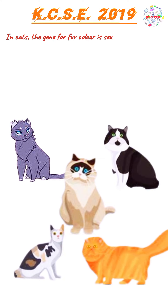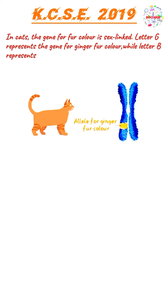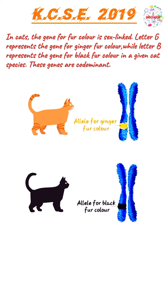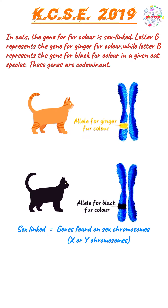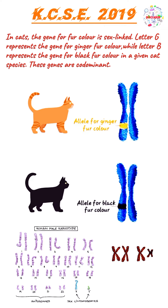In cats, the gene for fur color is sex-linked. The letter G represents the gene for ginger fur color, while the letter B represents the gene for black fur color. This tells us that the genes responsible for fur color in this cat species are found on the sex chromosomes — that is what is meant by sex-linked. The sex chromosomes, X and Y, determine the sex of an individual. Some genes are located on the sex chromosomes and are inherited together with those that determine sex.